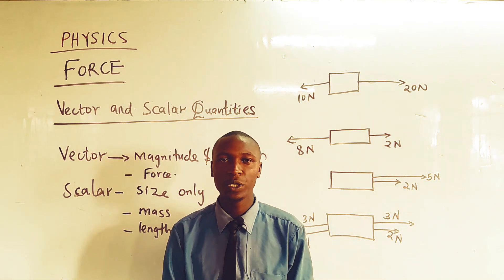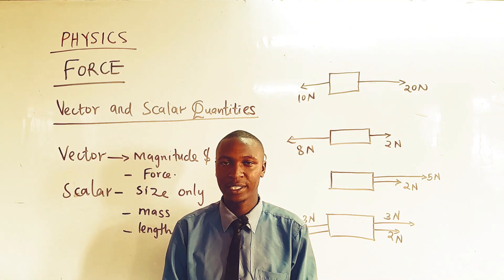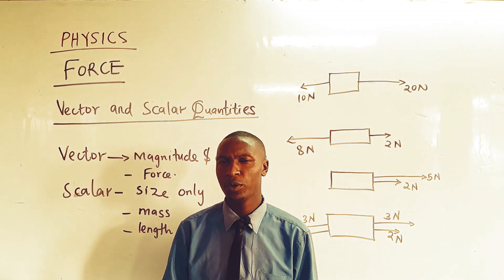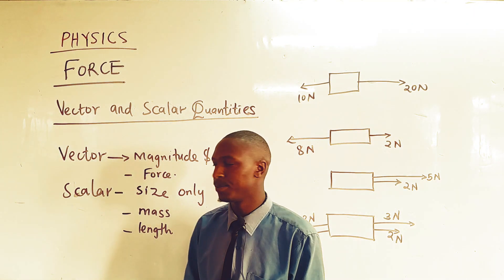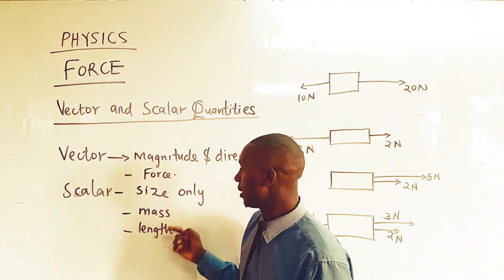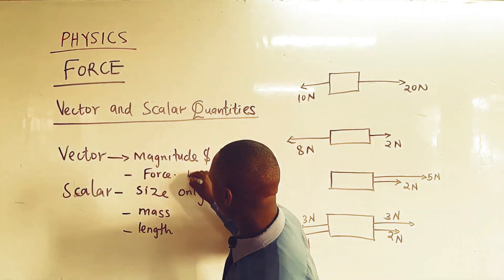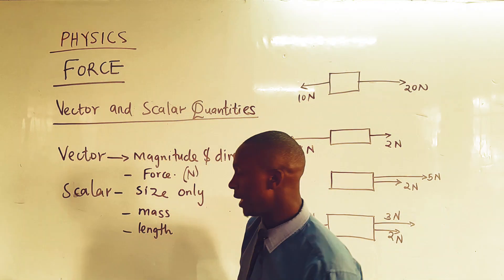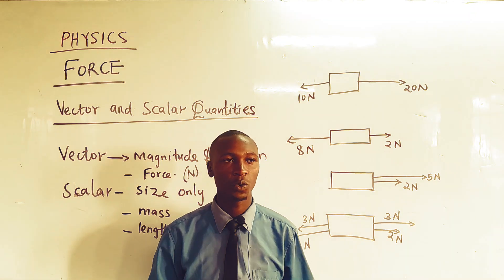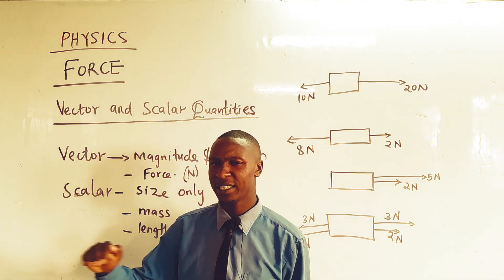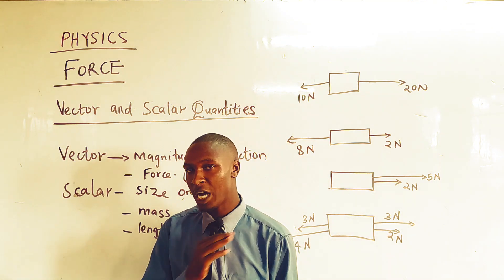A scalar quantity deals with magnitude only — the size — and we don't talk about direction. An example of a vector quantity is force, which is measured in newtons. We could say this is a force of 20 newtons towards the x-axis direction or towards the north, and so on.